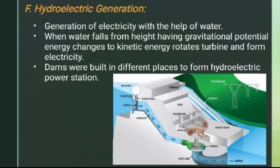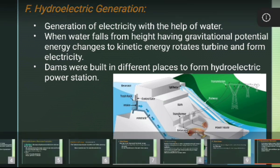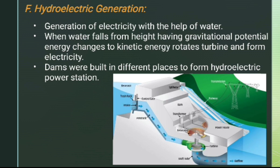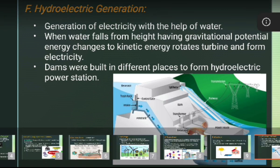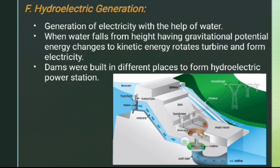Hydroelectric power: gravitational potential energy is converted to kinetic energy as water flows, rotating turbines connected to a generator. Dams are built in different places to enable hydroelectric power generation.